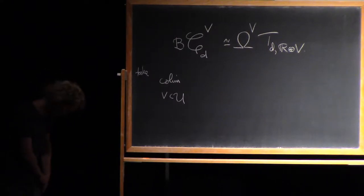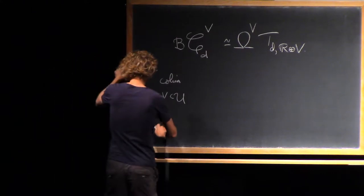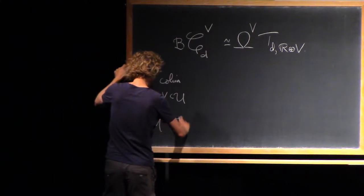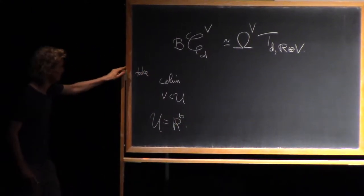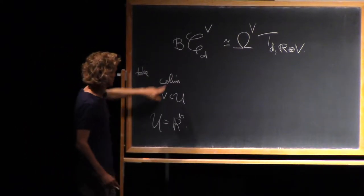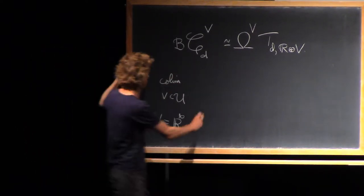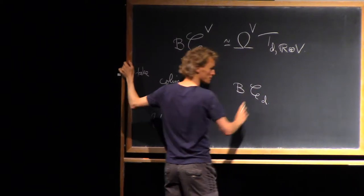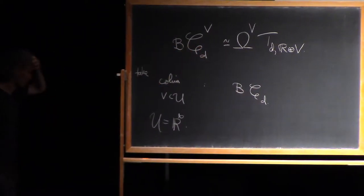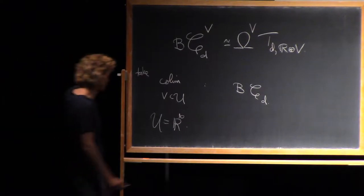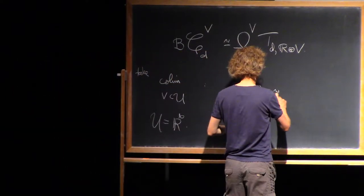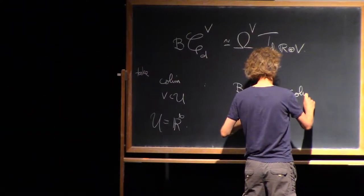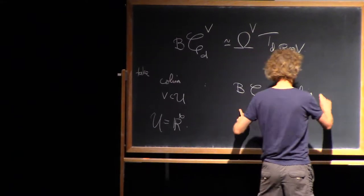We can take co-limit over subspaces of an infinite dimensional vector space. So the left-hand side was then called just cd, topologically enriched subcategory. And the right-hand side, well, it is what it is.